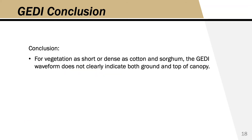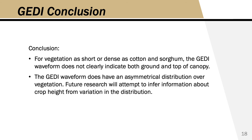So what's the conclusion? With GEDI data, for vegetation as short as cotton or as dense as sorghum, the GEDI waveform doesn't seem to pick up both the top of canopy and the ground. We do get a good return at the top of canopy, but we cannot distinguish the ground. The GEDI waveform does have an asymmetrical distribution over vegetation, and future research will attempt to infer information about crop height from variation in that distribution.